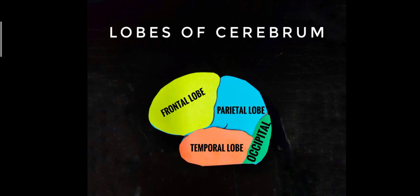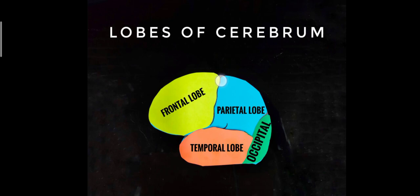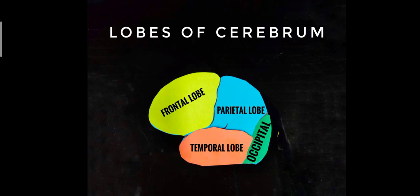Here you can see the four lobes: the frontal lobe which is colored yellow, the parietal lobe which is colored blue, the occipital lobe which is colored green, and the temporal lobe which is colored red. These are the major lobes that you should keep in mind when you remember the term cerebrum.